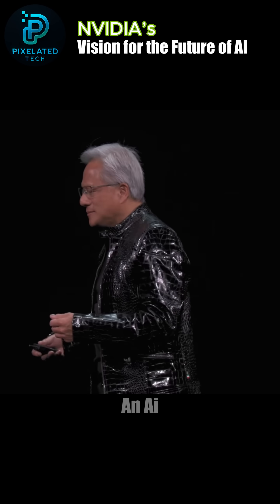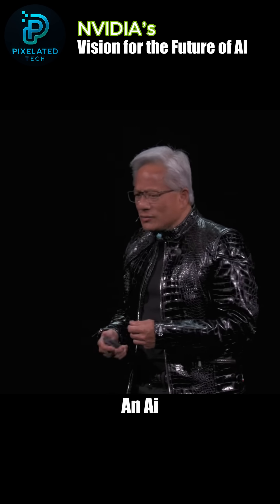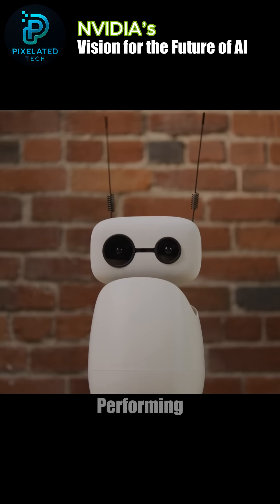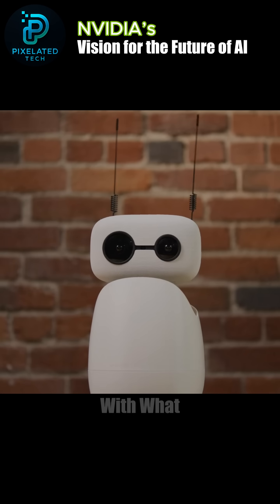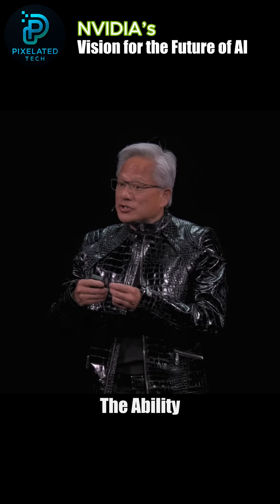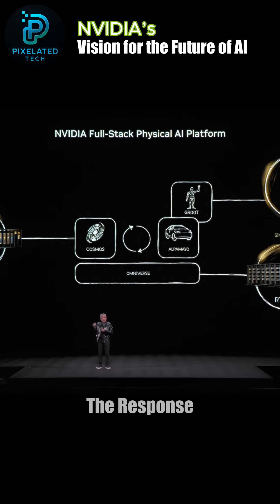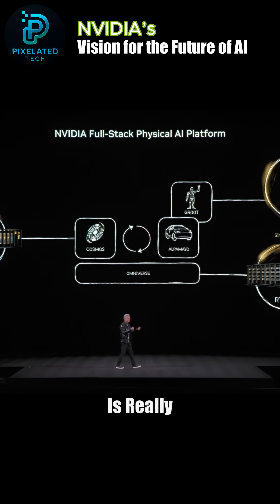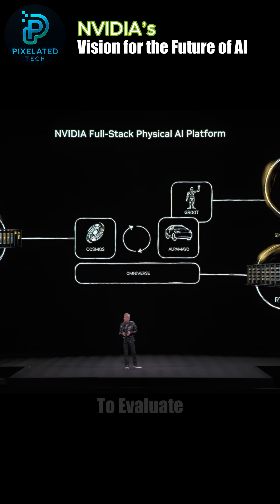How does an AI know that the actions it's performing are consistent with what it should do, if it doesn't have the ability to simulate the response of the physical world back on its actions? The response of its actions is really important to simulate. Otherwise, there's no way to evaluate it. It's different every time.